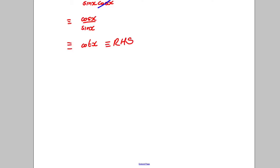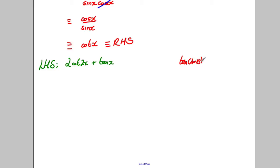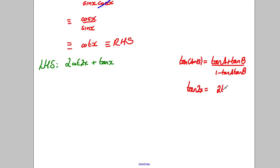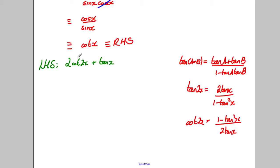Now I'm going to show you this in another way — I think this way is slightly easier. Again, starting with the left-hand side: 2cot(2x) plus tan(x). In the formula booklet we have the double-angle formula for tan: tan(a+b) = [tan(a) + tan(b)] / [1 − tan(a)tan(b)]. So tan(2x), which is tan(x+x), equals 2tan(x) / [1 − tan²(x)]. Therefore cot(2x) = [1 − tan²(x)] / [2tan(x)].